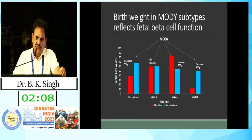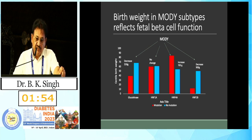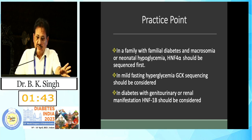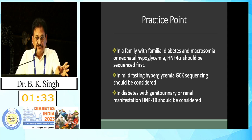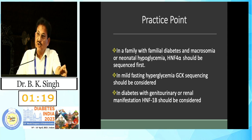Regarding birth weight in MODY subtypes reflecting fetal beta cell function: in HNF4A-mutated patients, macrosomia is more common. For clinical practice: in a family with familial diabetes and macrosomia or neonatal hypoglycemia, HNF4A should be sequenced first. If only mild fasting hyperglycemia is suspected, GCK sequencing should be done. In diabetes with genitourinary manifestation, HNF-1 beta should be considered.